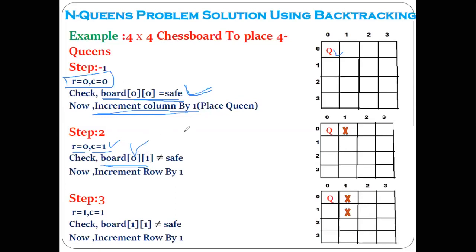Can we place the queen at row 0, column 1? No, because this second queen is coming on the same row — if they are on the same row, they will attack each other. That is why board[0][1] is not safe. We cannot place the queen at position (0,1).